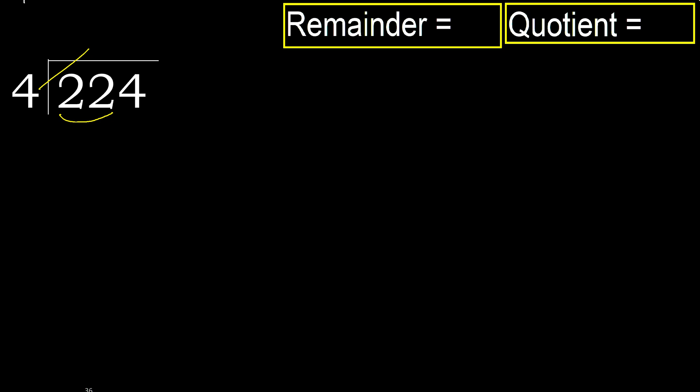4 multiplied by 6 is 24. 24 is greater. 4 multiplied by 5 is 20. 20 is not greater.